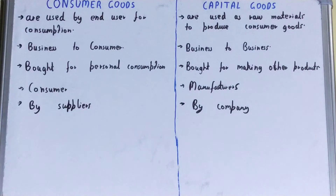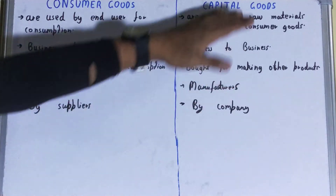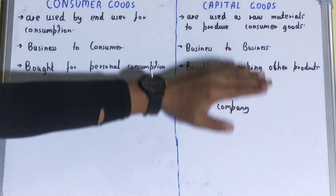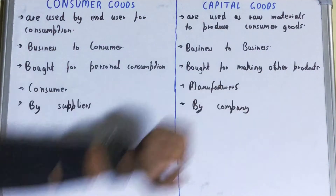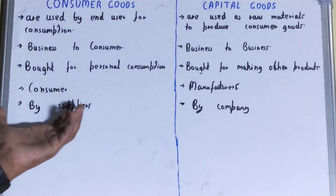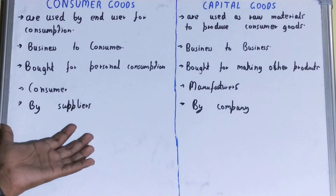Next, if we talk about the buyer, then in the case of consumer goods the buyer is the consumer or the end user. But in the case of capital goods, the buyer is the manufacturers.